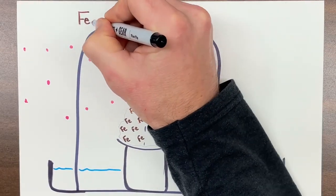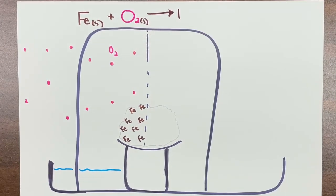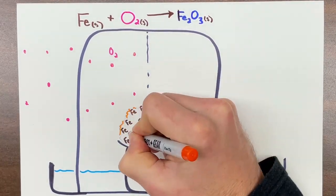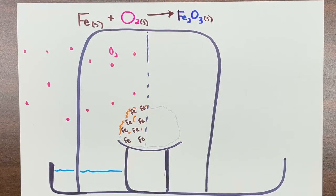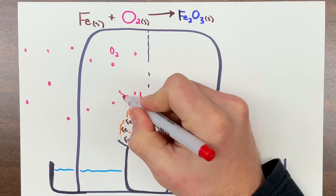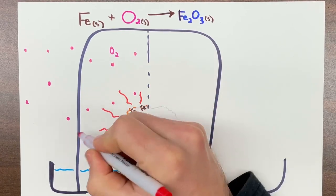Iron, Fe, reacts with the oxygen gas, the pink O2, to produce iron 3 oxide, Fe2O3, in blue. The oxygen is a gas, but the iron and iron oxide are solids. The 9-volt battery initiates the reaction and we quickly cover before the air is heated much.